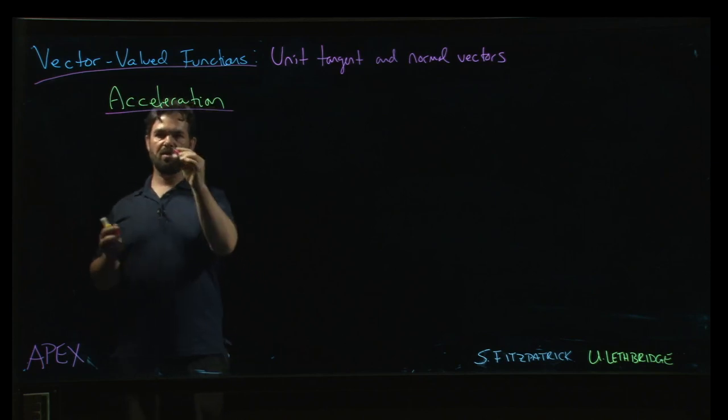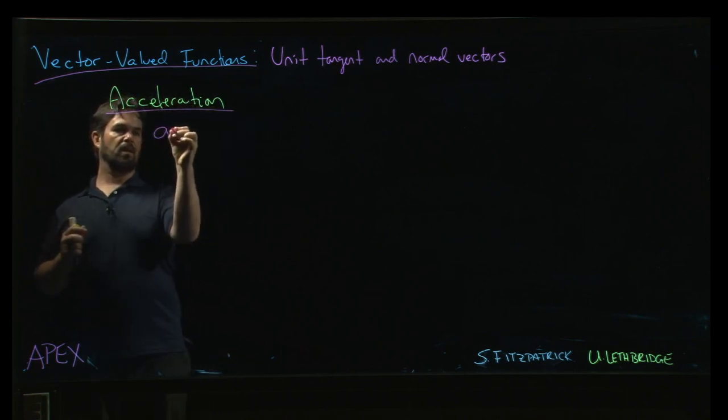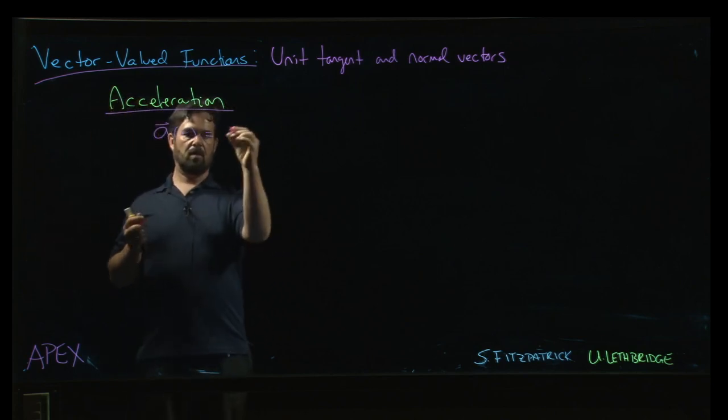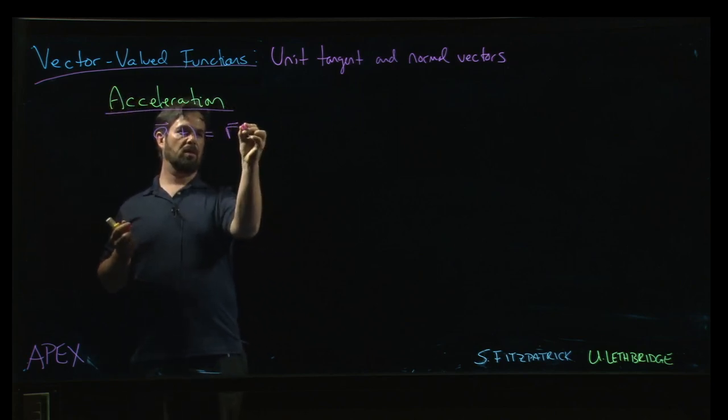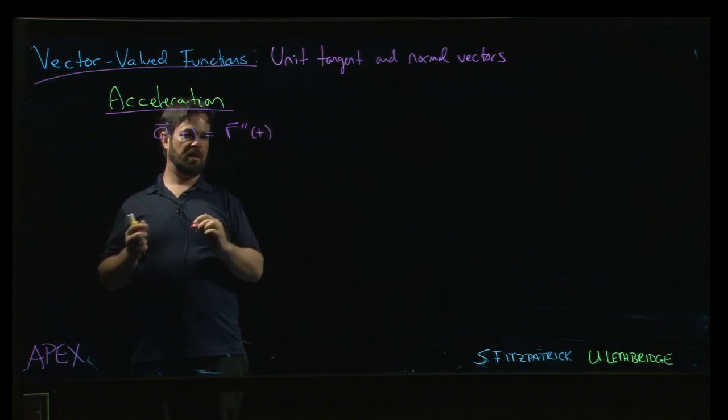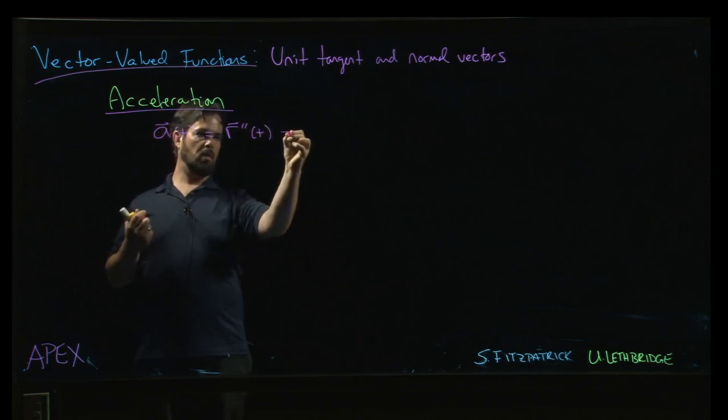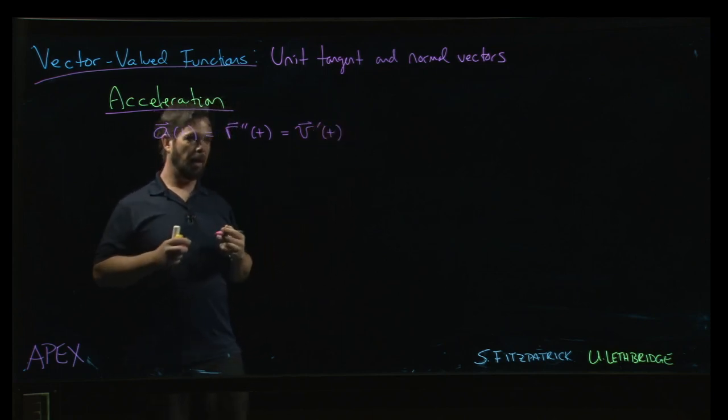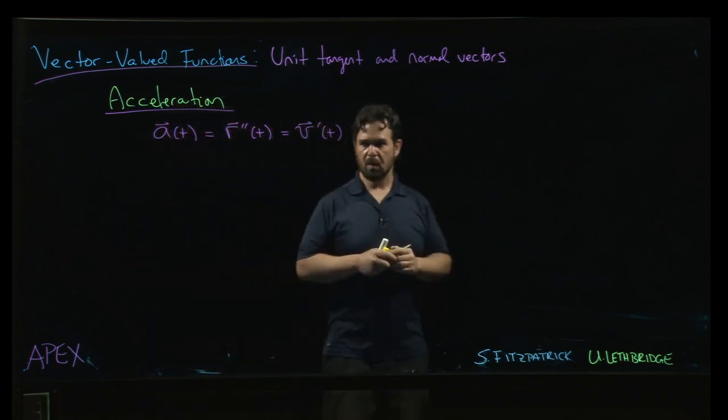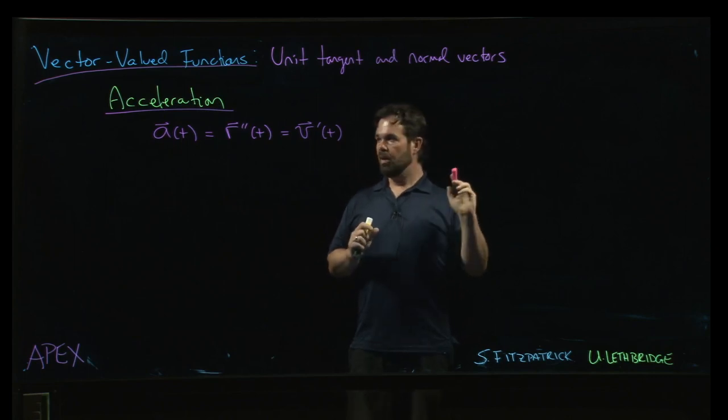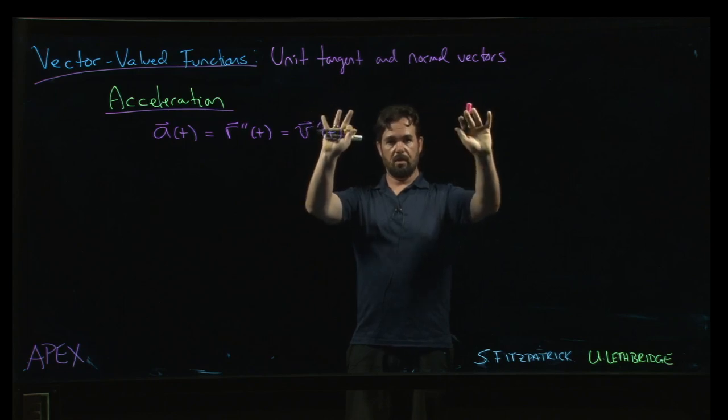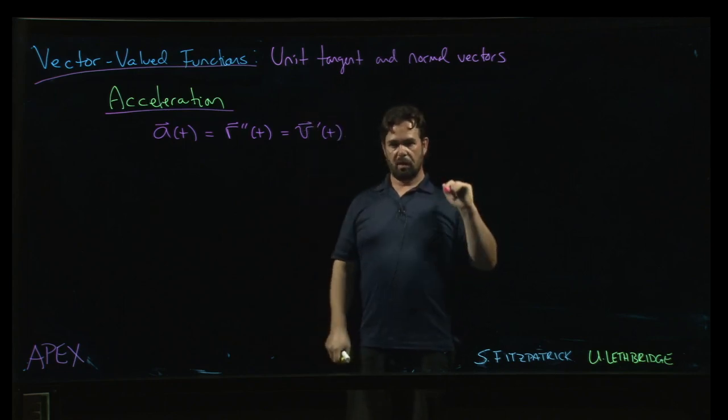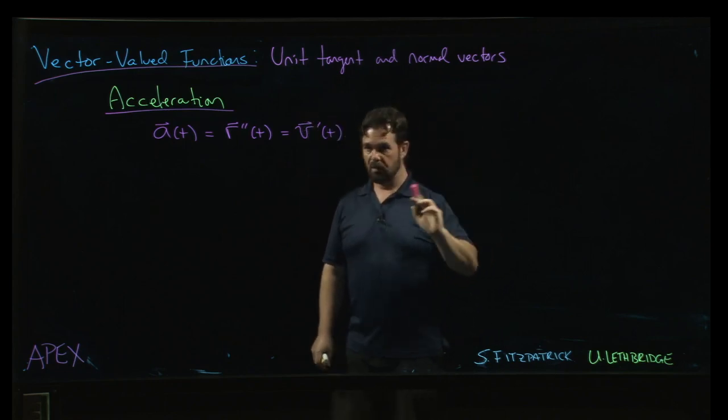We know something about acceleration. We know that acceleration is just, well, it's r double prime of t, or if you like, it's v prime. Okay, so we know that, but what's going to be useful here in this context of the unit tangent and the unit normal vectors is to express the acceleration in terms of those vectors.